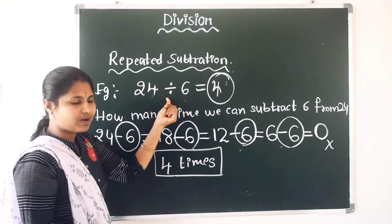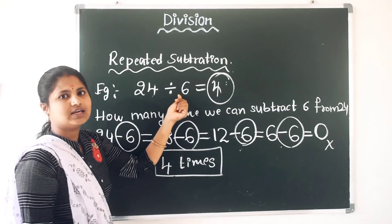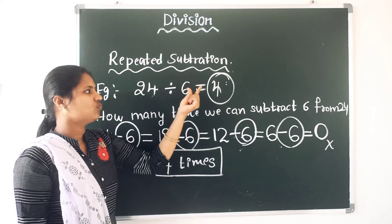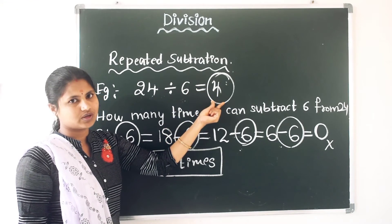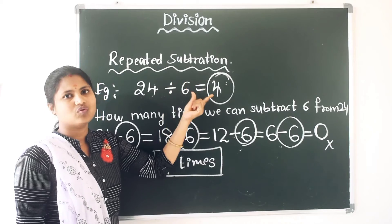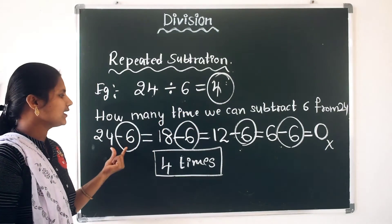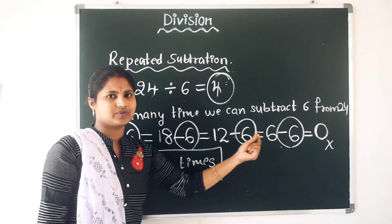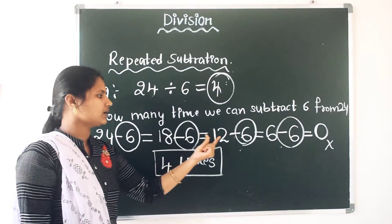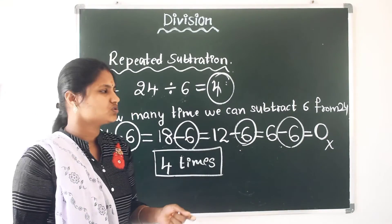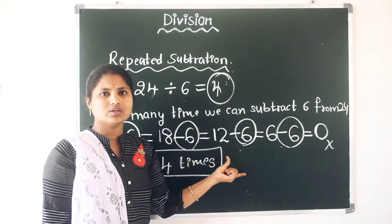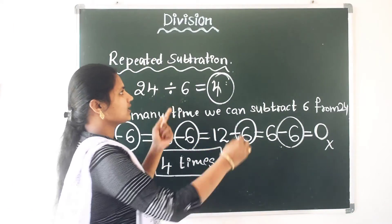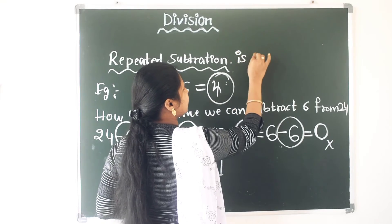So 24 divided by 6 is equal to 4. 24 mangoes divided by 6 children is equal to 4 — each child got 4 mangoes. We have subtracted the same number repeatedly. So from this we can know that repeated subtraction is known as division.